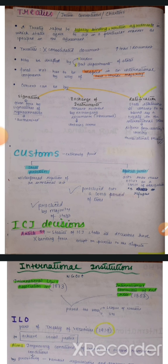Second, by exchange of instruments. Instruments are certain documents which contain the terms and conditions of the treaty. Yeh saari documents ko exchange karke bhi hum ek treaty ko consent de sakte hain.